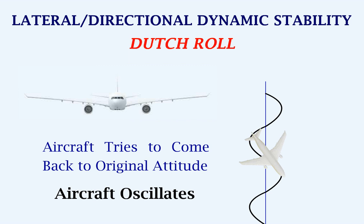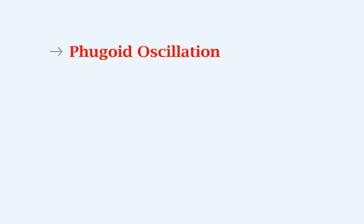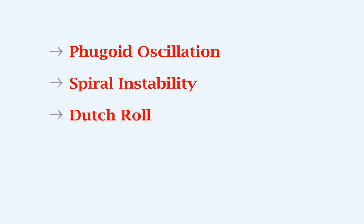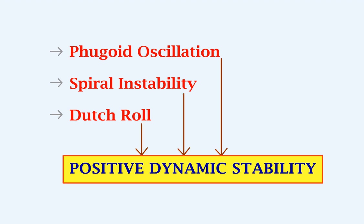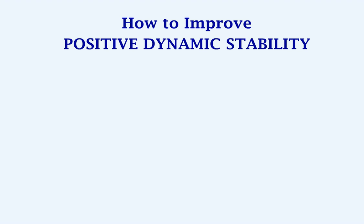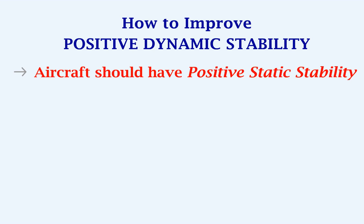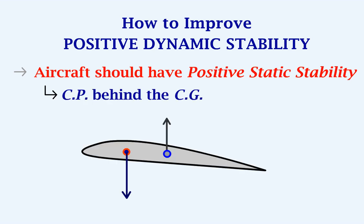In order to avoid cases like phugoid oscillation, spiral instability, and Dutch roll, the aircraft should have positive dynamic stability. Let's look at how to improve positive dynamic stability. First, the aircraft should have positive static stability. For static stability, the center of pressure (CP) should be behind the center of gravity (CG).